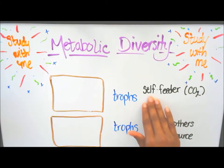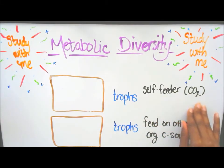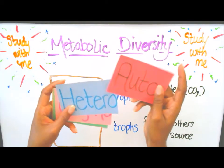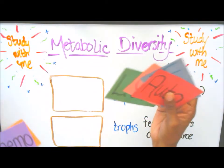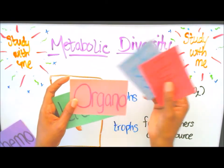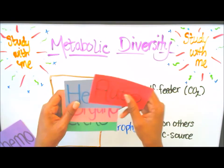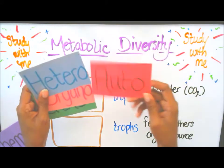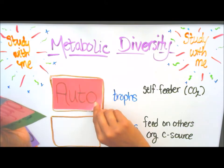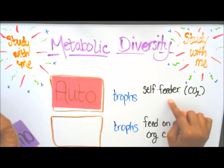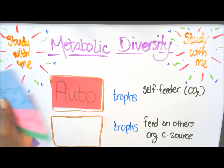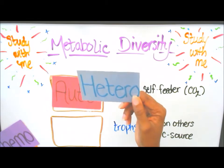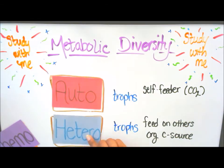Next, the second two. We have self feeder, and they use carbon dioxide. What trope is that? We've already used chemo and photo, so what we have left is auto, hetero, organo, and litho. Self feeder — auto. Autotrope is self feeder and they feed on carbon dioxide. The next one feeds on others' organic carbon source. Hetero means different, so others — heterotropes.